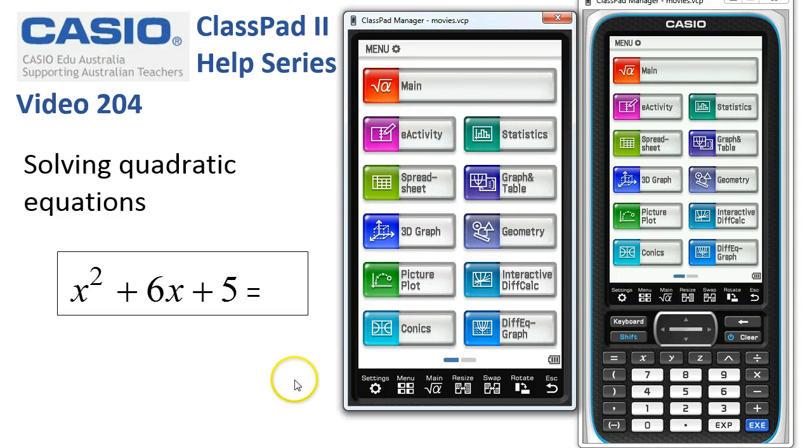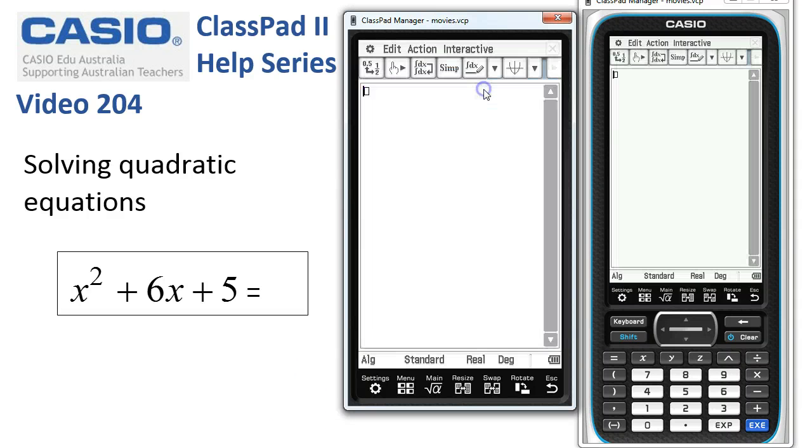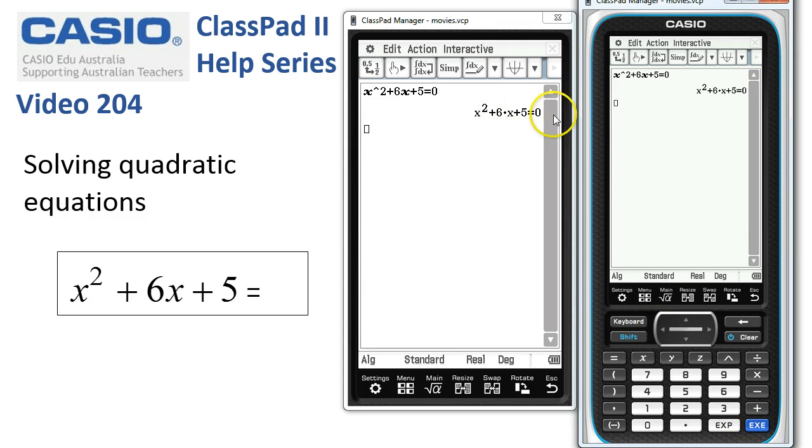Solving quadratic equations. We're going to start in main and everything's clear so we can start typing x to the power of 2 plus 6x plus 5 is equal to 0. I'm going to tap Execute just to make sure that what I typed in shows up on the right hand side.